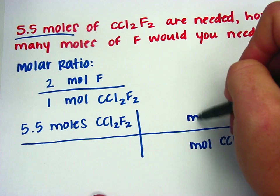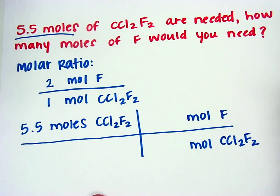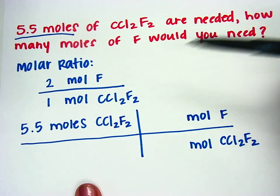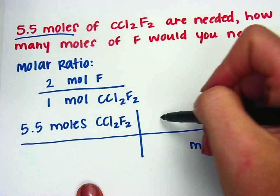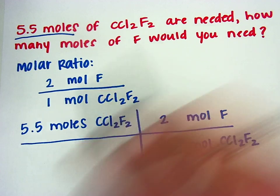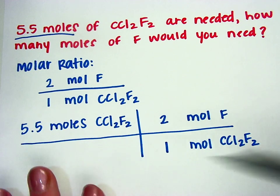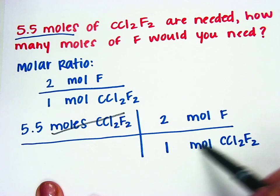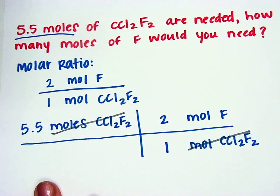And I want to get to moles of fluorine. My molar ratio was two moles of fluorine in one mole of the whole thing. I know that because there's a little two right here. So then all I have to do is multiply. My units will cancel out on the top and on the bottom, and I'll be left with moles of fluorine.